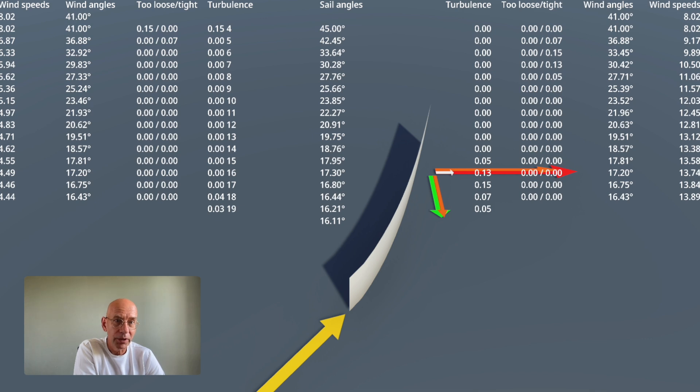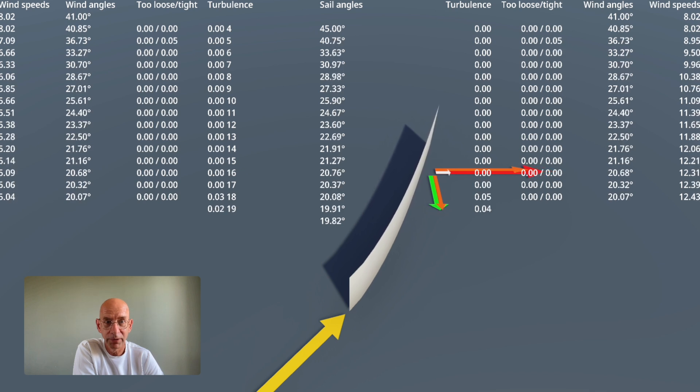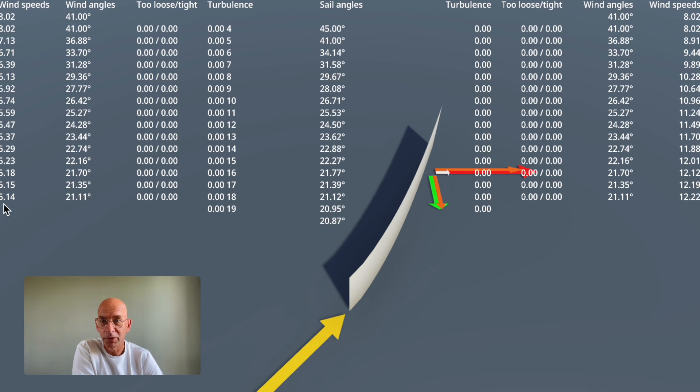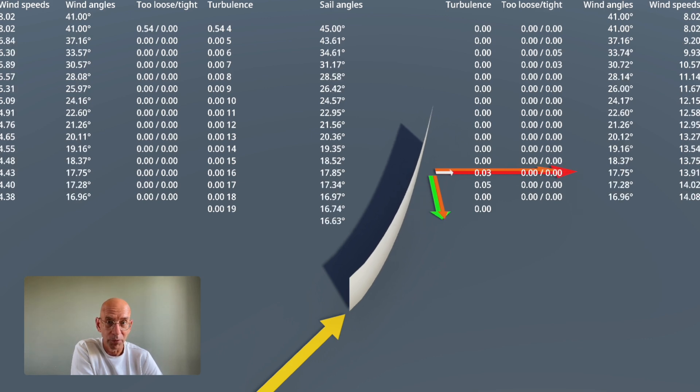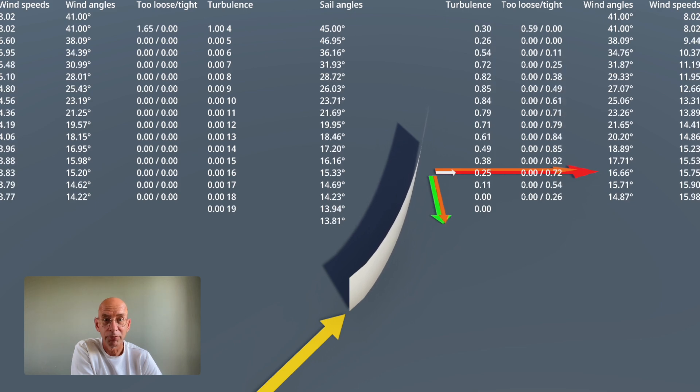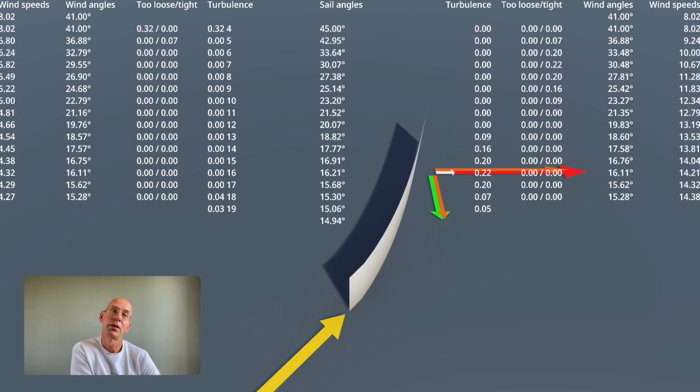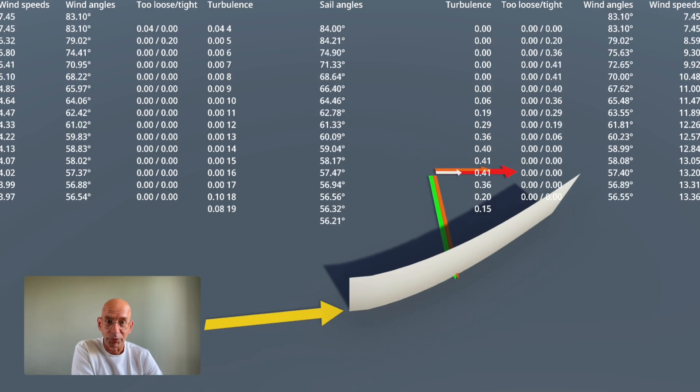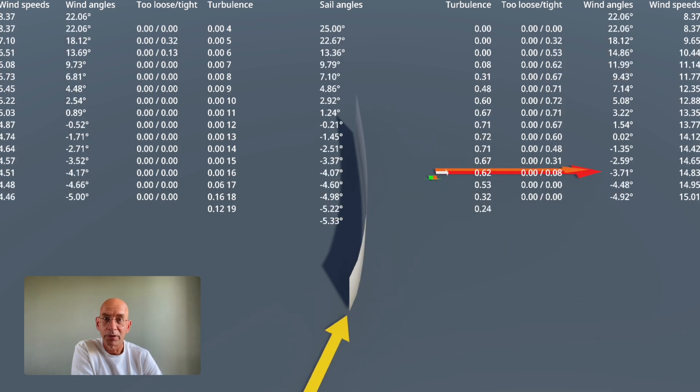Now if I change the depth of the sail and make it flatter, you can see what happens - 12.22, 5.14. It was 4 and 13 just a moment ago. So you can see what happens when you make your sail more deep, and also of course what happens when the angle of the wind changes.